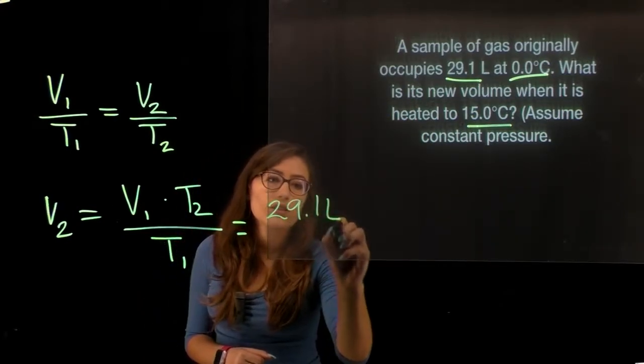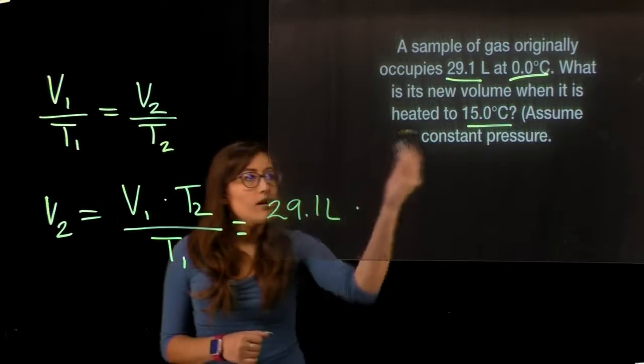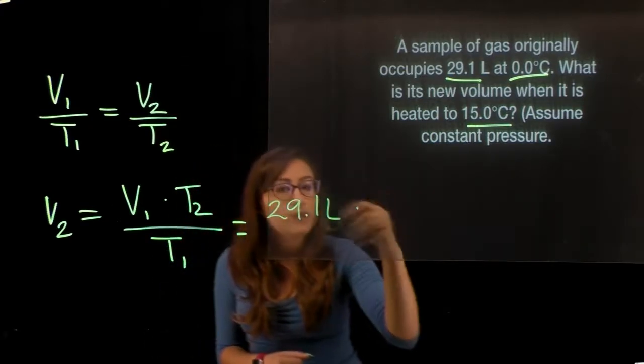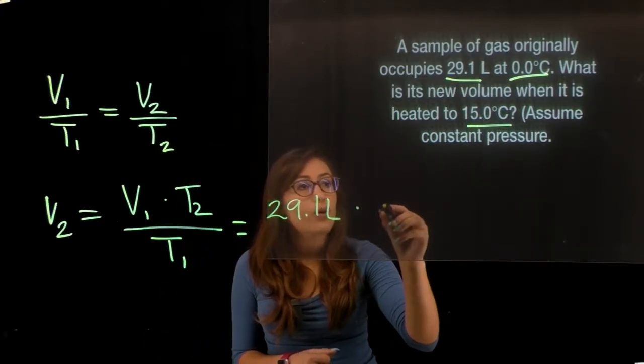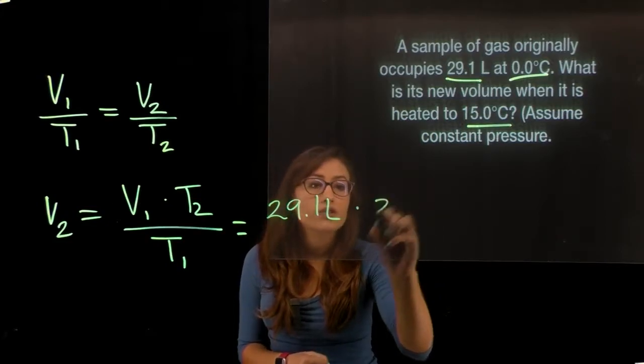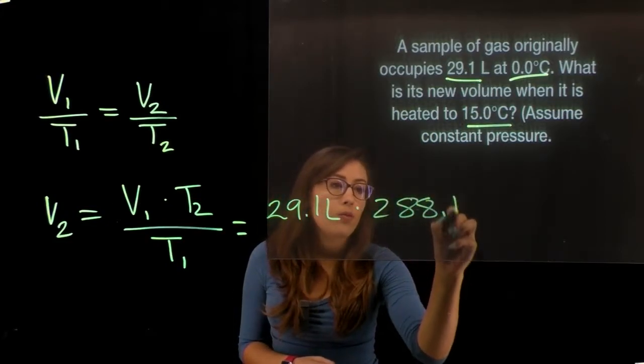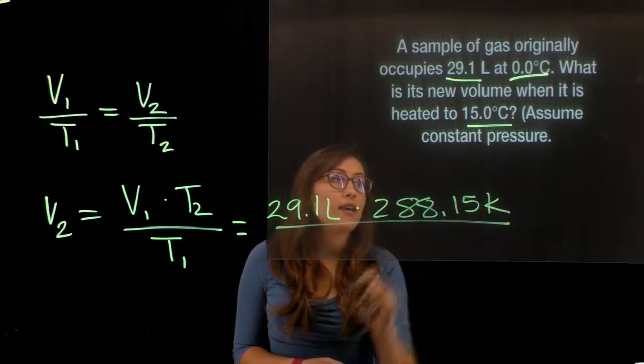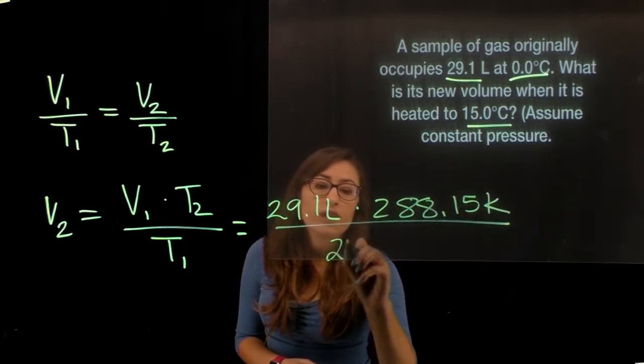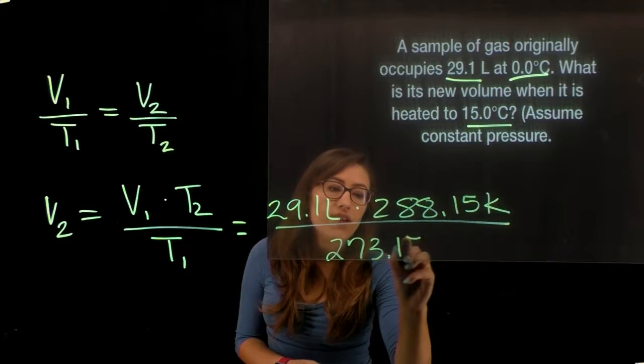is 29.1 liters times our final temperature, which we add 273.15 to it and we get 288.15 Kelvin divided by 273.15 Kelvin.